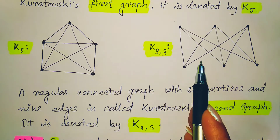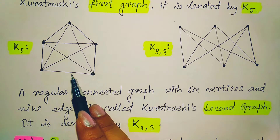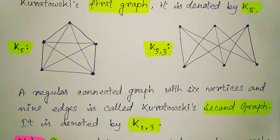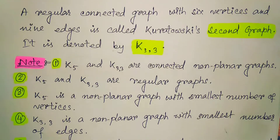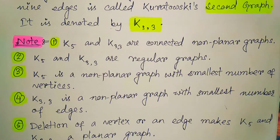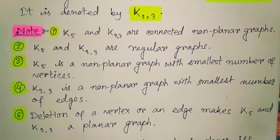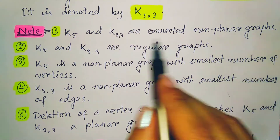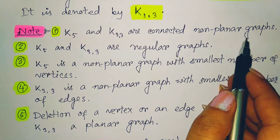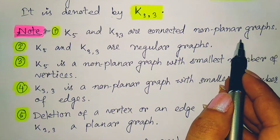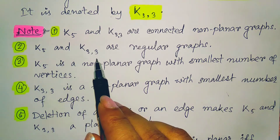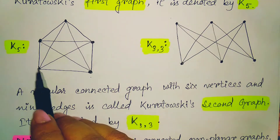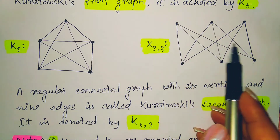Both graphs are well known to us. The first one is the complete graph with 5 vertices, and the second one is the complete bipartite graph with 6 vertices. Now, K5 and K3,3 are connected non-planar graphs. K5 and K3,3 are also regular graphs — all vertices in K5 have degree 4 and all vertices in K3,3 have degree 3.